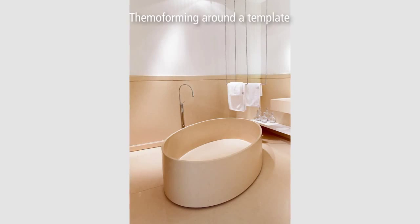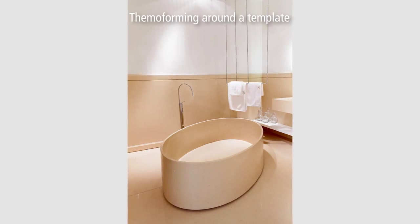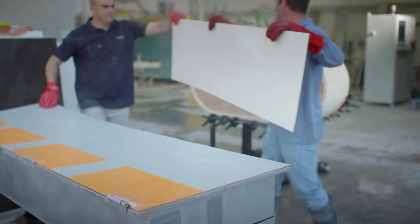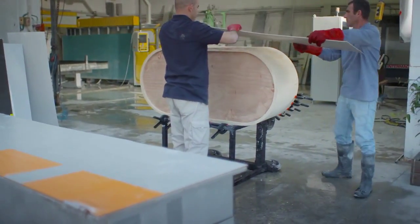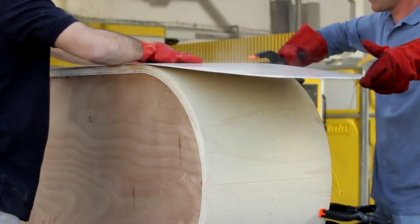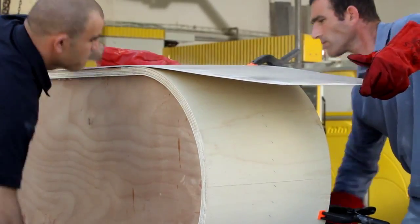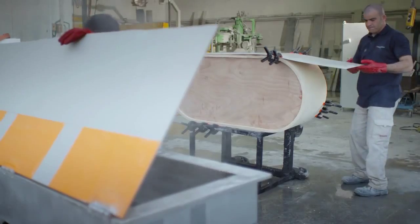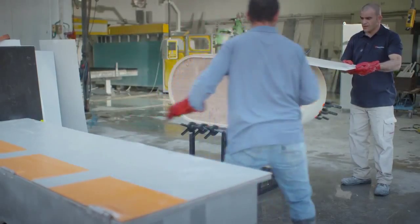This bathtub was made with the thermoforming around the template technique. Bend the flexible Caesarstone around the template and secure it with clamps. You will need to pour hot water over the Caesarstone a few times to keep it flexible, otherwise it may break.